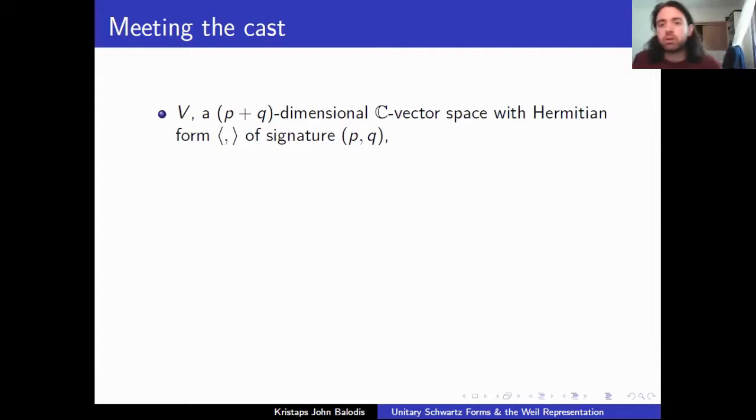In particular, we can normalize this to plus one, minus one for each of them. So then G is going to be the Lie group U(p, q), and this is the isometry group of the vector space with respect to this inner product. So basically what that means, it's the collection of invertible linear transformations that preserve the inner product.